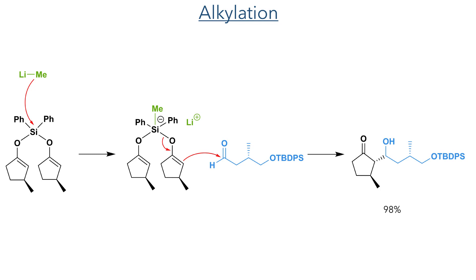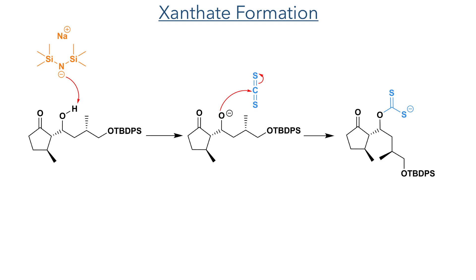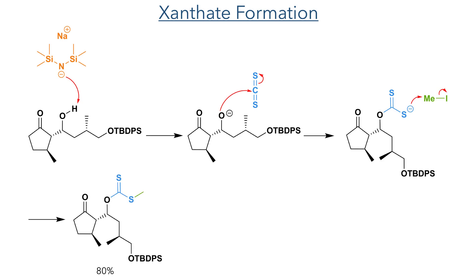Using the aldehyde acceptor necessitated the use of a deoxygenation step, which was carried out using a Barton-McCombie reaction. This reaction uses a xanthate intermediate, which was synthesized by first deprotonating the alcohol with sodium HMDS, which then added to carbon disulfide. This was methylated using methyl iodide to form the desired xanthate in an 80% yield.